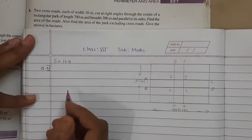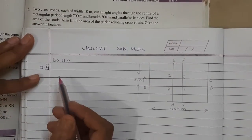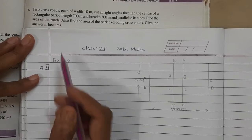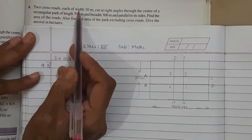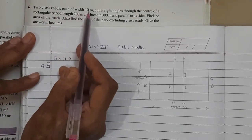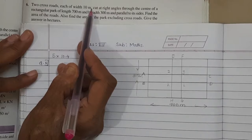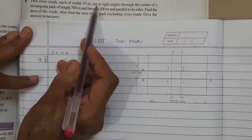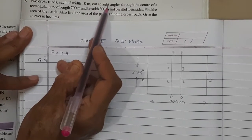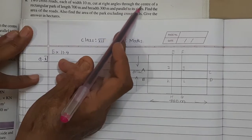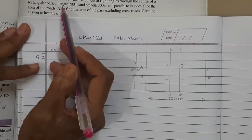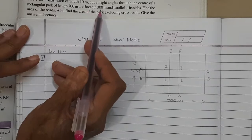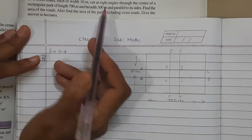Good morning students. Let's solve exercise 11.4 question number 6. Two cross roads, each of width 10 meter, cut at right angles through the center of the rectangular park of length 700 meter and breadth 300 meter.